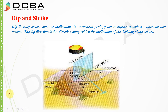Dip literally means slope or inclination. In structural geology, dip is expressed both as direction and amount. The dip direction is the direction along which the inclination of the bedding plane occurs — whichever direction the bedding planes are inclined downwards is the dip direction — and the amount is the angle that makes with the horizontal plane.